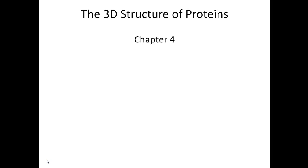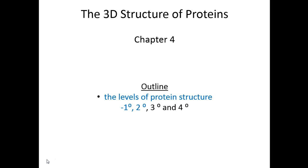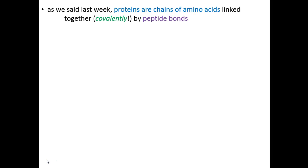This will be a two-part lecture series. In this first chunk, we'll talk about the levels of protein structure. We break protein structure up into four levels: primary, secondary, tertiary, and quaternary. We'll be discussing only primary and secondary in this lecture chunk. In the next lecture, we'll finish up with tertiary and quaternary structure, a little bit about how proteins fold, and a single slide on how we view the three-dimensional structure of proteins.